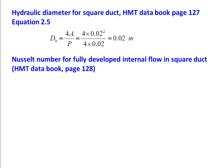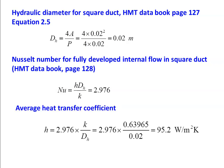For fully developed internal flow in a square duct at constant wall temperature conditions, the Nusselt number Nu = h·Dh/k = 2.976. Calculating the heat transfer coefficient: h = 2.976 × k/Dh = 2.976 × 0.63965 / 0.02 = 95.2 W/m²·K.